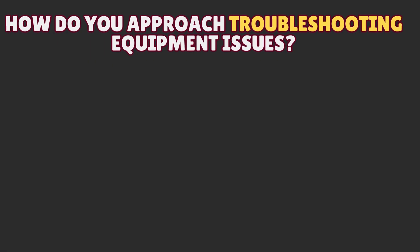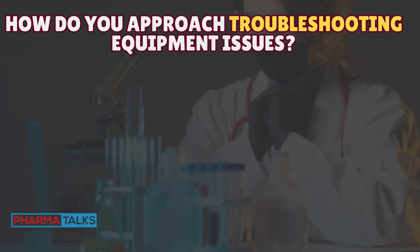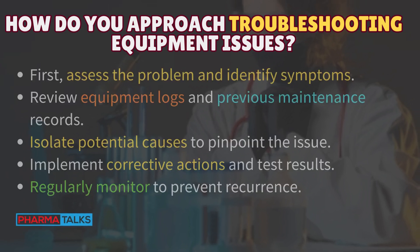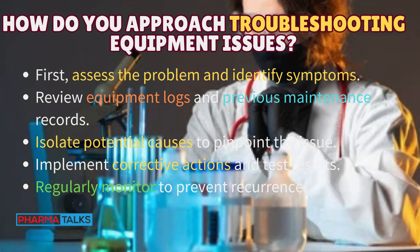Improving and troubleshooting production processes: How do you approach troubleshooting equipment issues? First, assess the problem and identify symptoms. Review equipment logs and previous maintenance records. Isolate potential causes to pinpoint the issue. Implement corrective actions and test results. Regularly monitor to prevent recurrence.